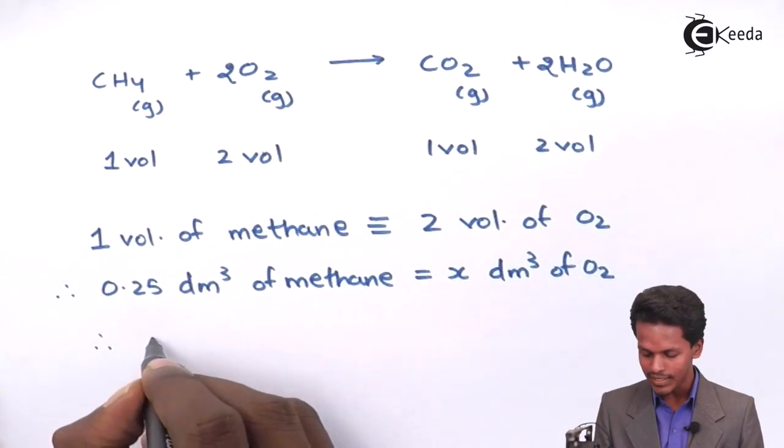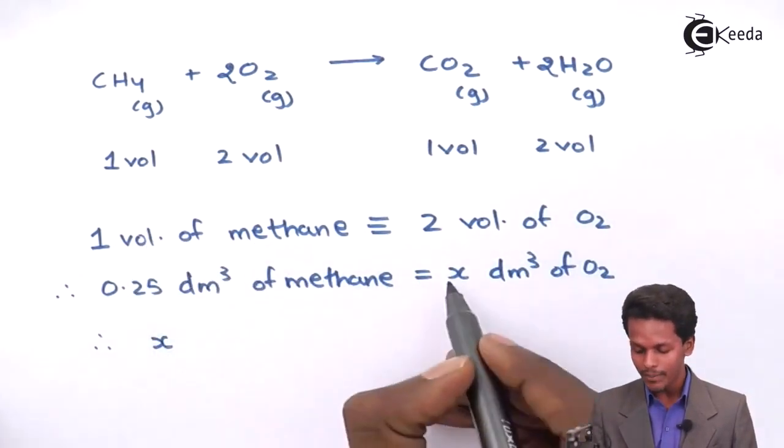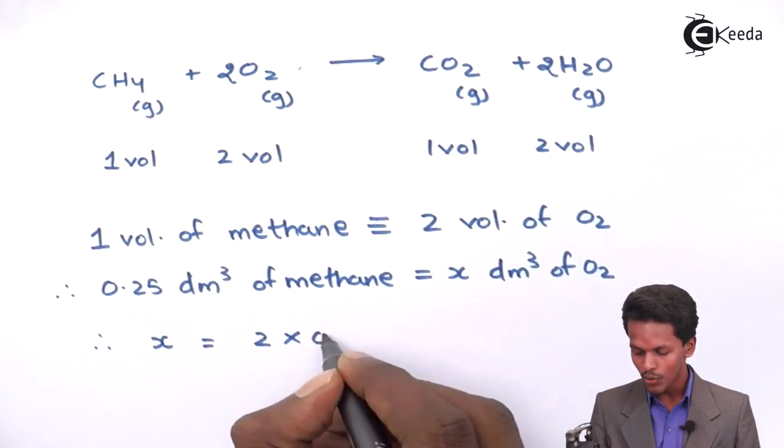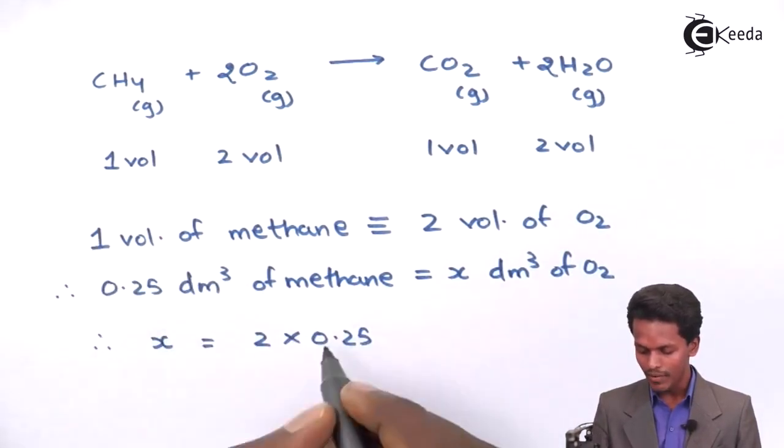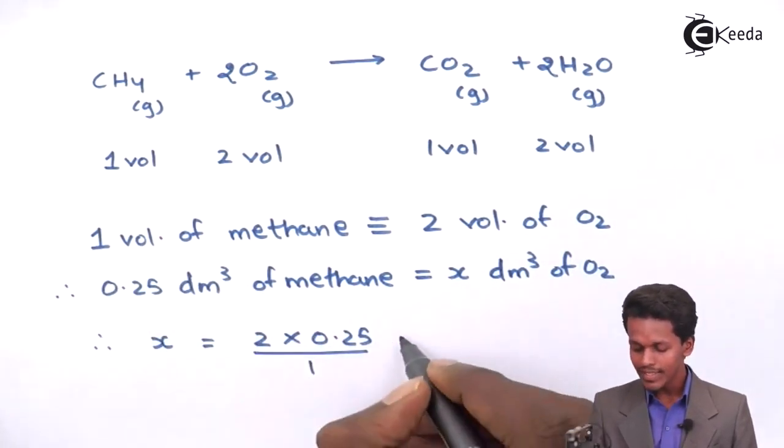So, therefore, it is a very simple process, that is, I will cross multiply it, x will be equals to 2 into 0.25 divided by 1. So the answer that I could get is, 0.50.